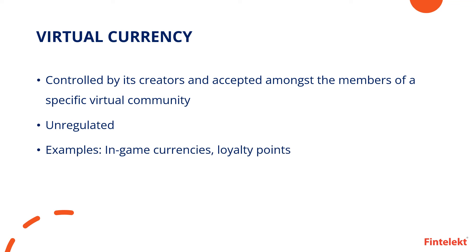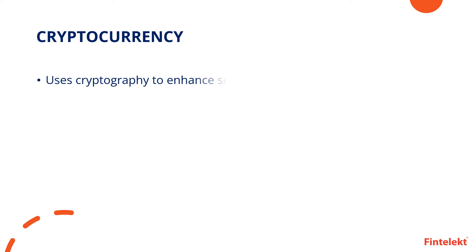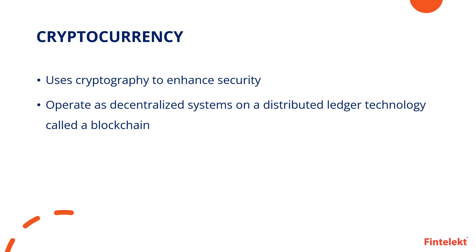For example, in-game currencies and loyalty points are virtual currencies. A cryptocurrency is a type of virtual currency which uses cryptography to enhance security. Cryptocurrencies operate as decentralized systems on a distributed ledger technology called a blockchain. Bitcoin and Ethereum are some examples of cryptocurrencies.